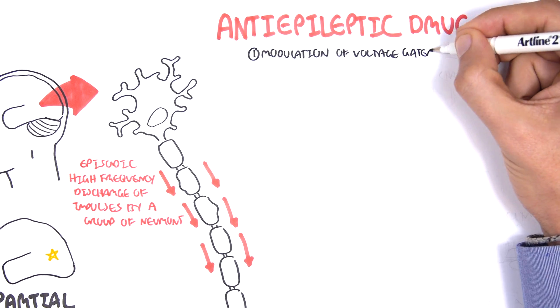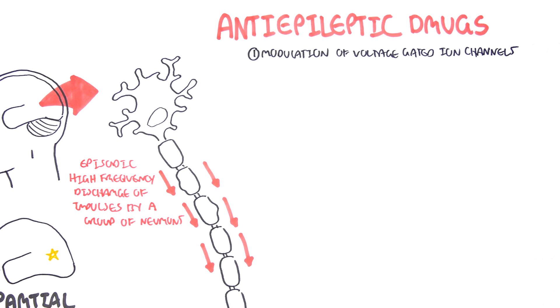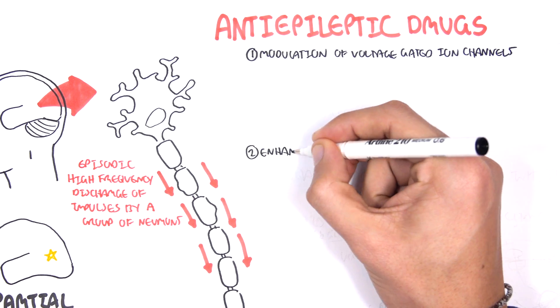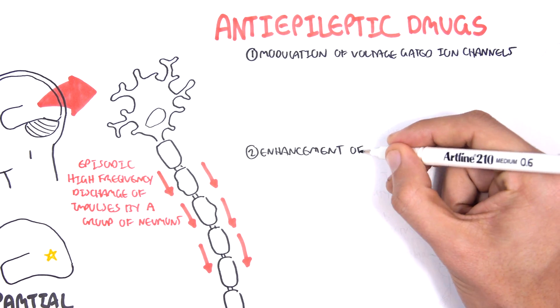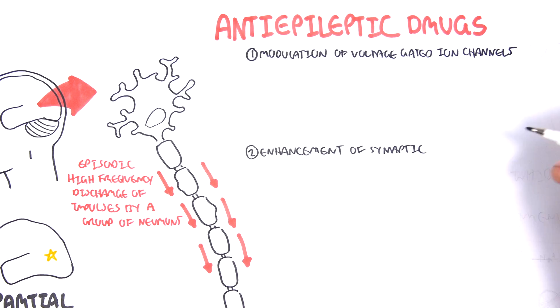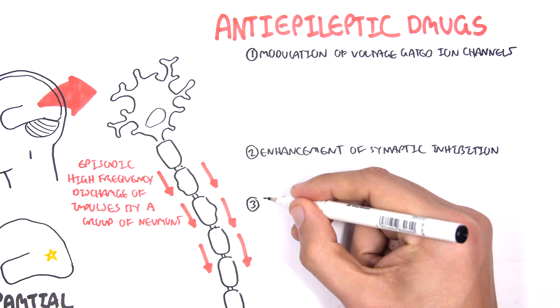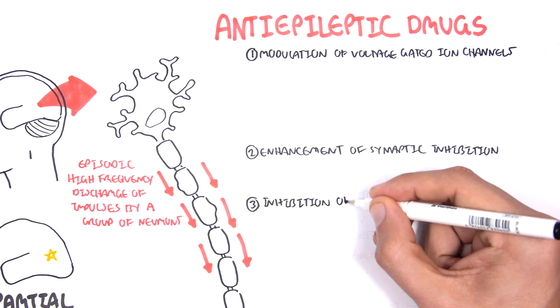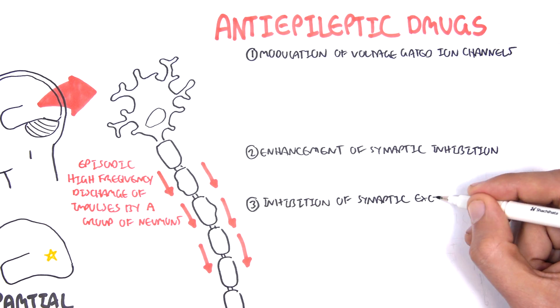Drugs to treat epilepsy can be divided into three types. One, drugs that modulate voltage-gated ion channels responsible for the propagation of the impulse. Two, drugs that enhance synaptic inhibition, stopping the impulses. Or three, drugs that inhibit synaptic excitement.